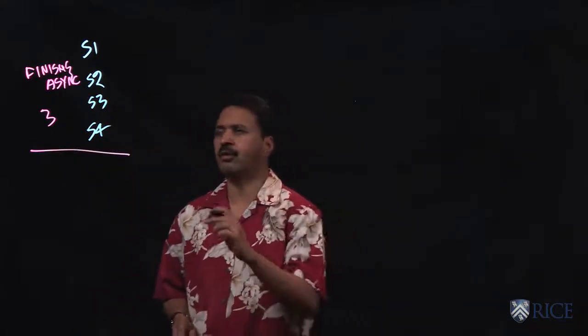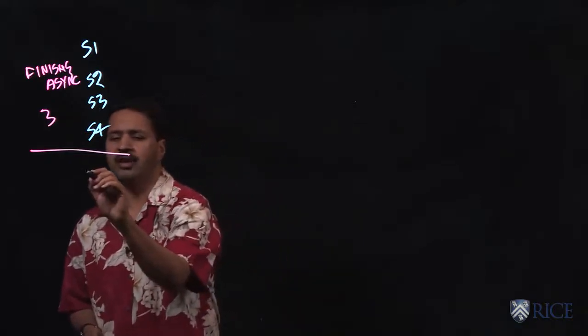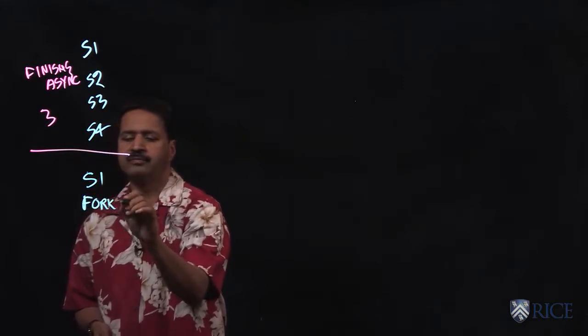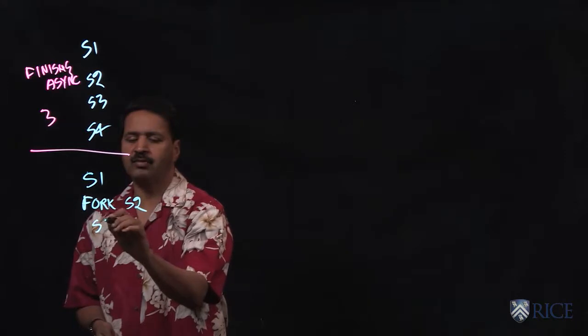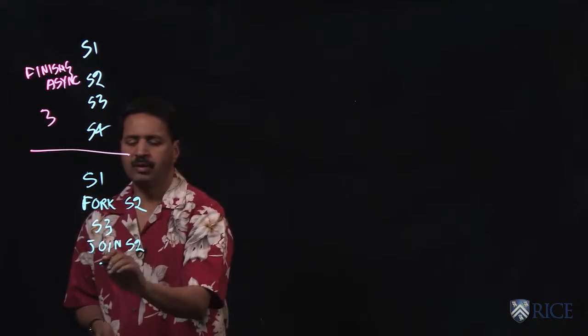Now in the fork-join parallel programming framework, what you learned was you can get the same effect by doing s1 fork s2, s2 s3, join s2, s4.